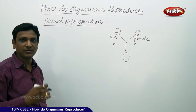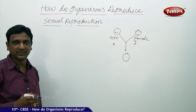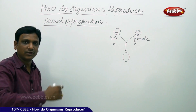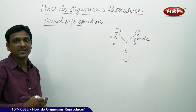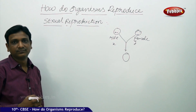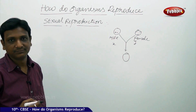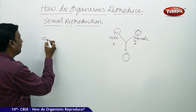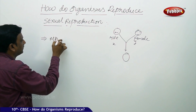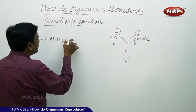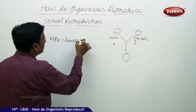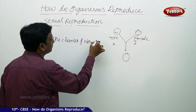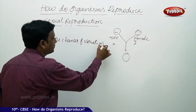In the asexual methods, we have seen that even though organisms are produced from a single organism, there are some changes in their DNA, so there are some variations. Here, in sexual reproduction, there is more scope for variations — more chances of variations, and many variations are produced.